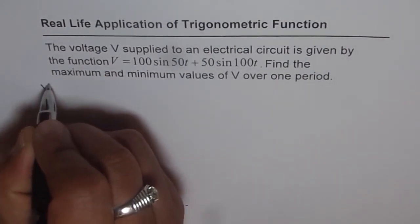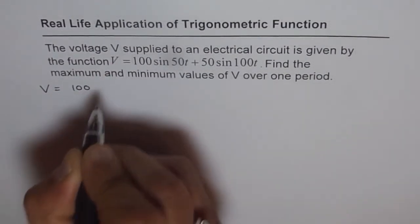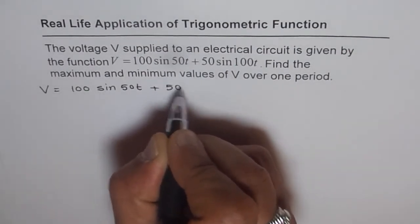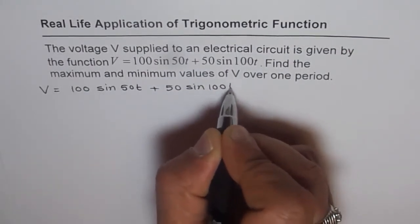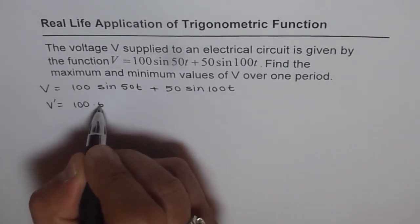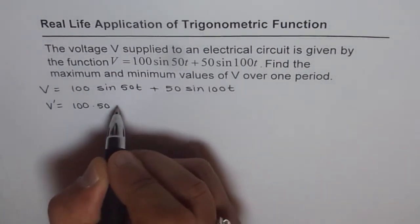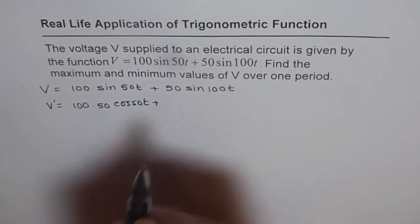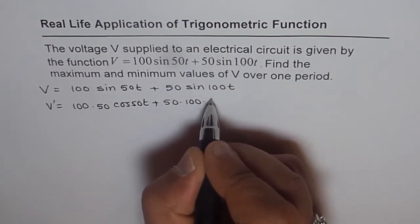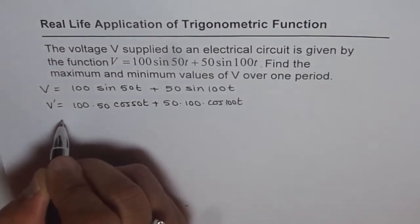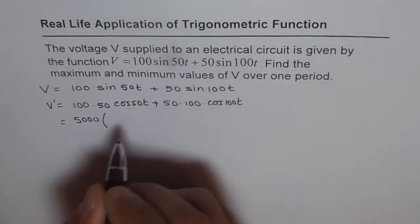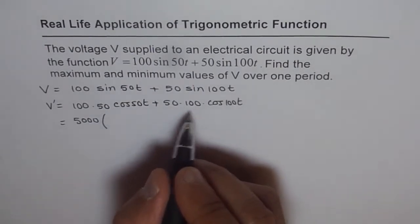V is given to us: V equals 100 sin(50T) plus 50 sin(100T). The first derivative will be 100 times 50 times cos(50T) plus 50 times 100 times cos(100T). We can factor out 5000, leaving us with 5000 times [cos(50T) plus cos(100T)].